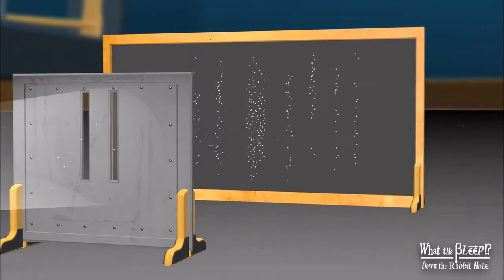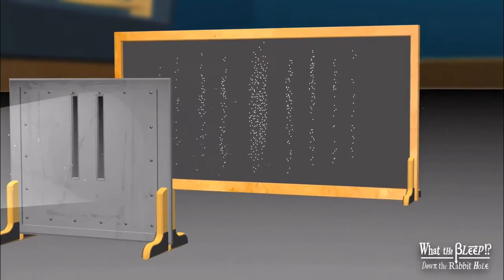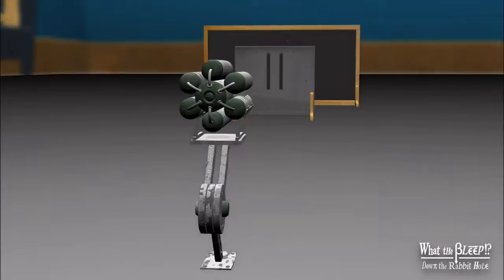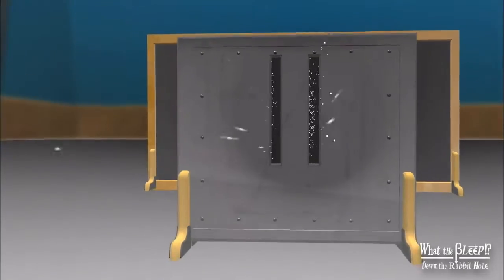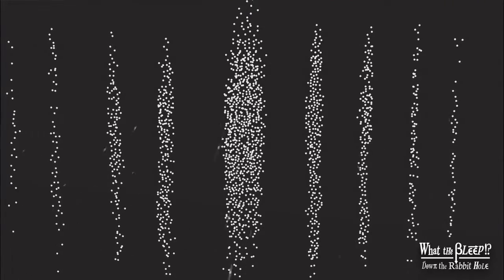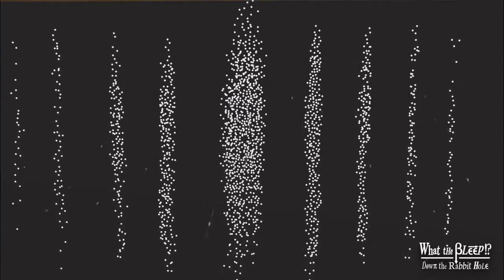What? An interference pattern! We fired electrons, tiny bits of matter, through, but we get a pattern like waves, not like little marbles. How? How could pieces of matter create an interference pattern like a wave? It doesn't make sense.